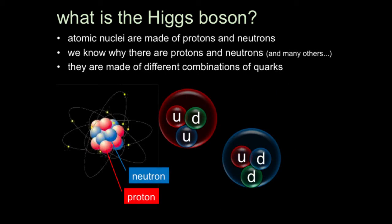We know that the nuclei of these atoms are made out of protons and neutrons. We know why there are protons and neutrons, and starting around the 1950s, there was an alphabet soup — you pick a letter, preferably in the Greek alphabet, and we'll probably have a particle named after that letter.